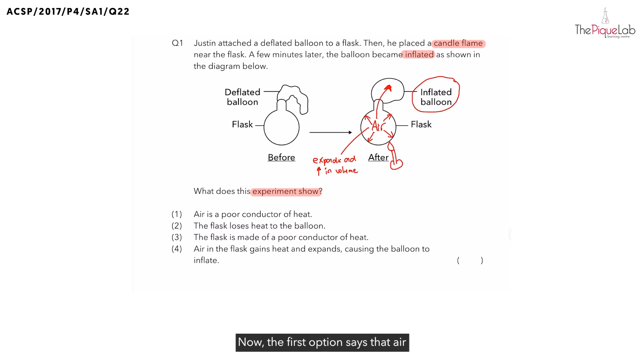Now, the first option says that air is a poor conductor of heat. Many of you might be tempted to think that this is true, so the answer is option one. But remember, we must make sure this is something that the experiment shows.